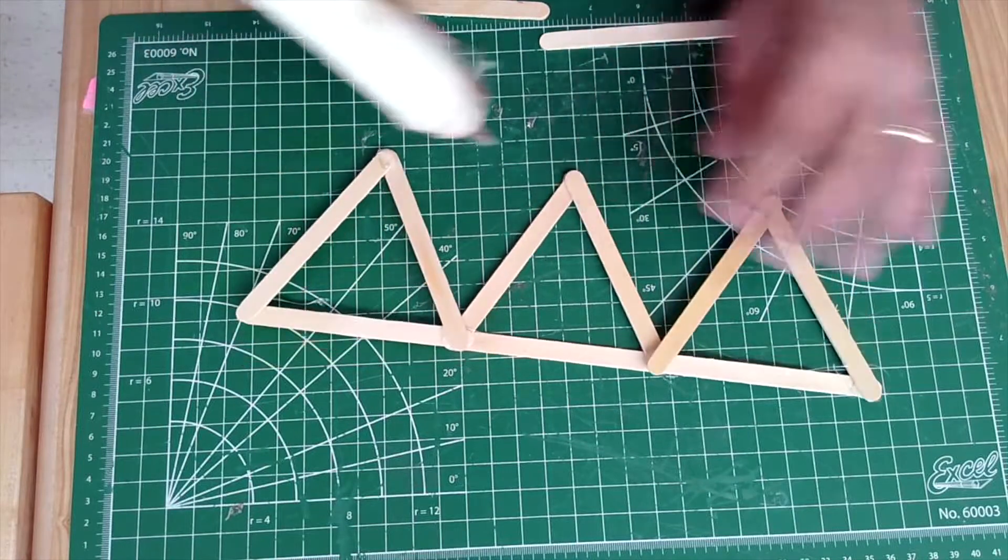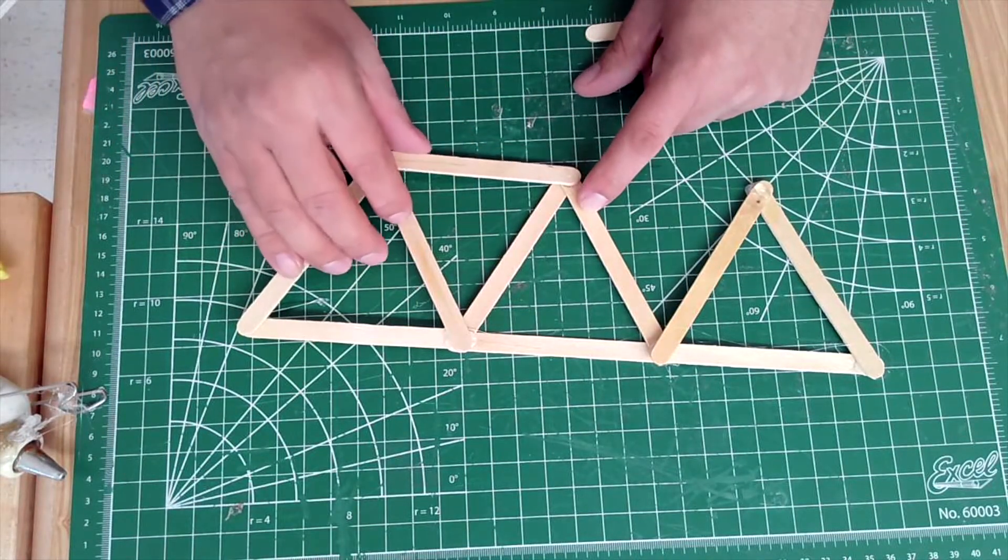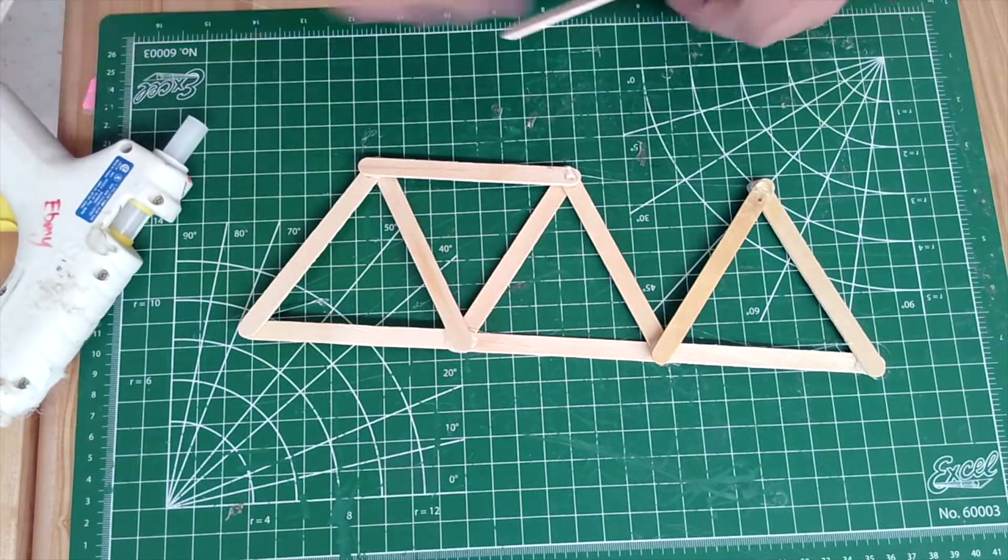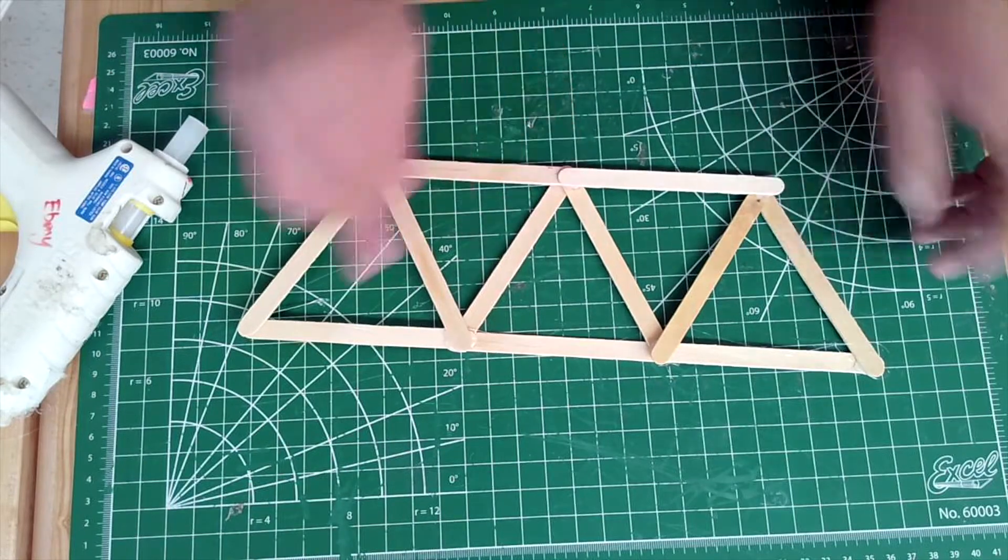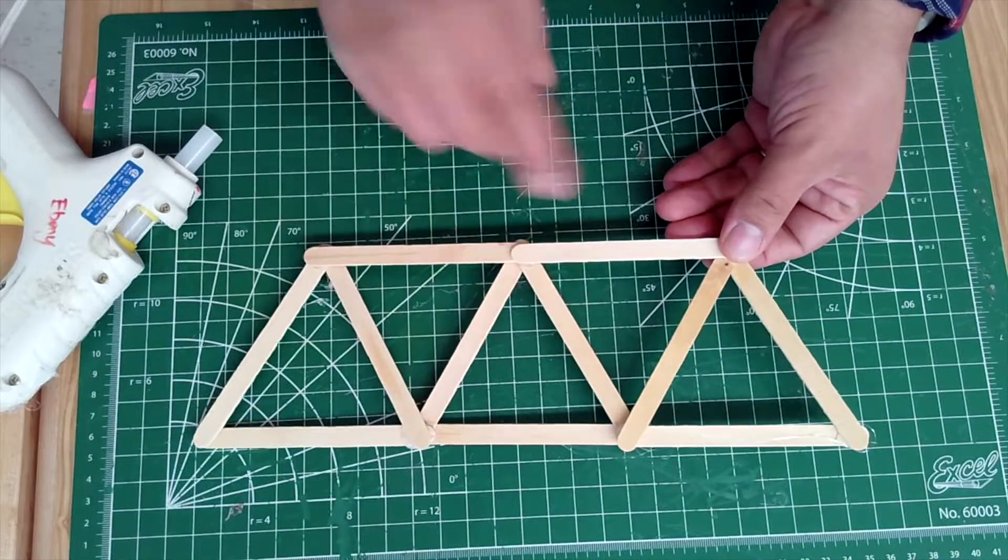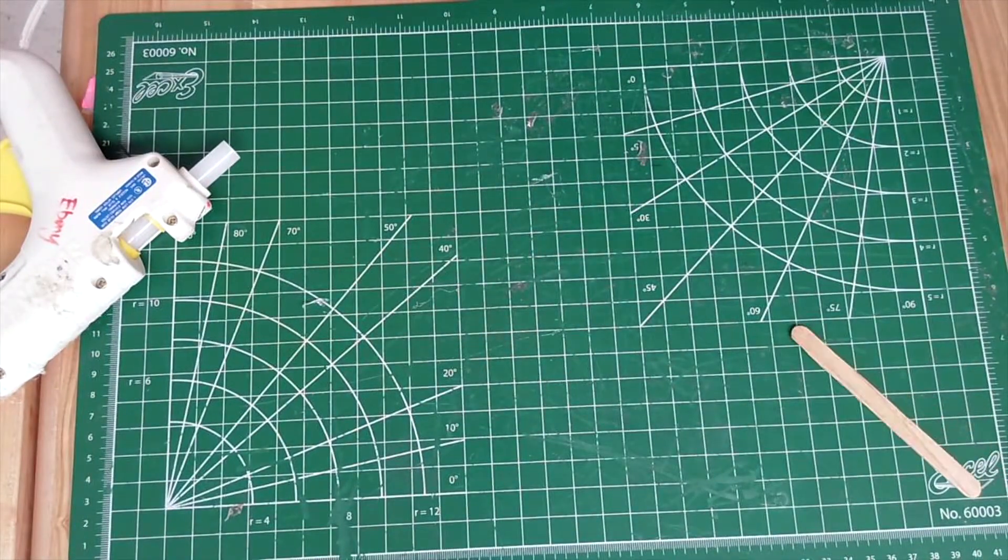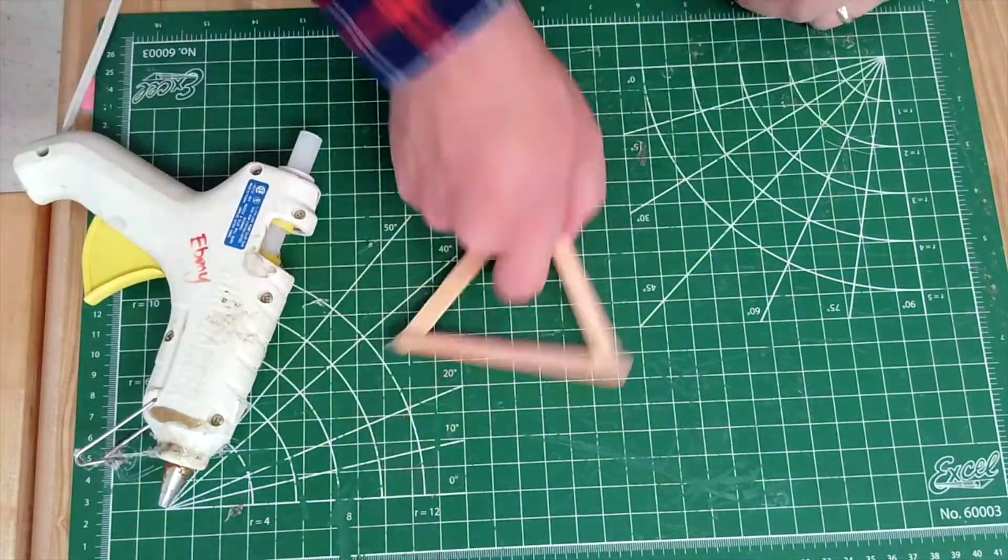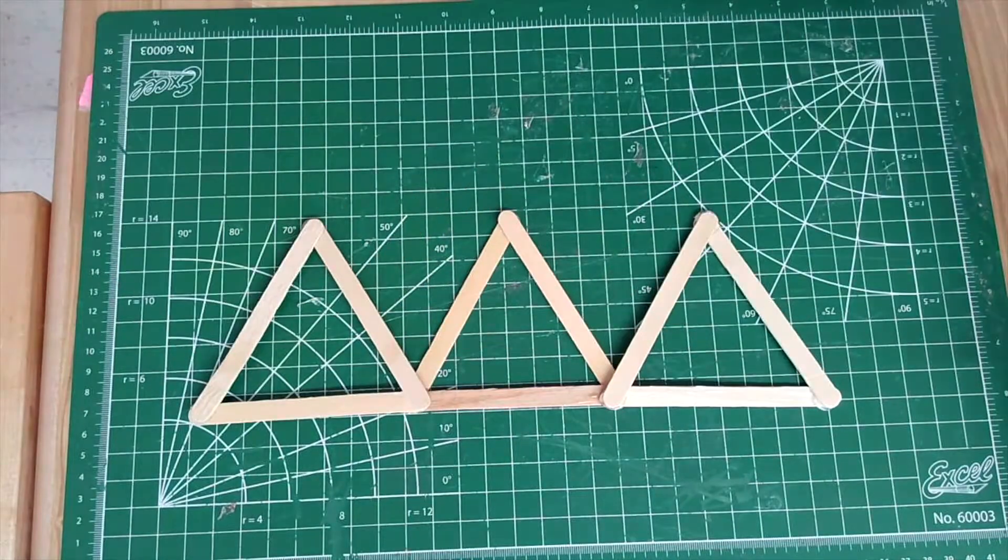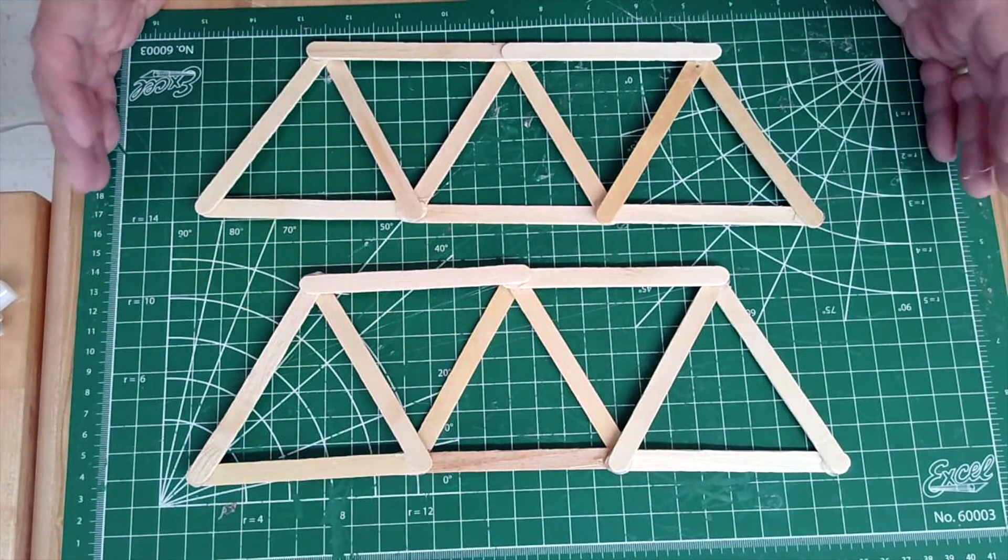Now we're going to take our last two popsicle sticks and we're going to glue them across to complete one wall of our bridge. Now we're using a very specific design for our bridge. And if you'll notice there's a lot of triangles. And we'll talk a little bit about why we're using these triangular shapes in just a minute. So we've constructed one wall of our bridge. Now we're going to have to do this two times. So I'm going to do the same thing over again but I'm just going to speed it up so that we have two of these walls. Now we have the two walls to our bridge complete.